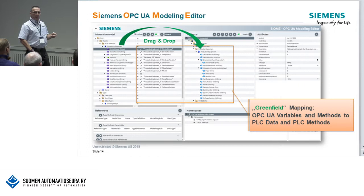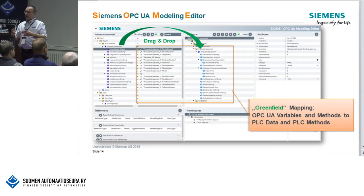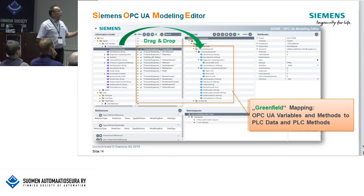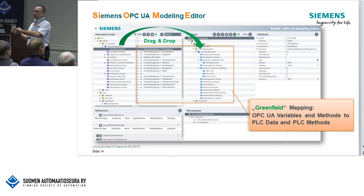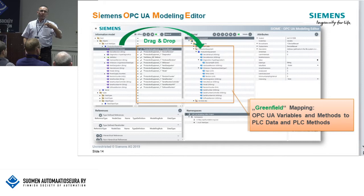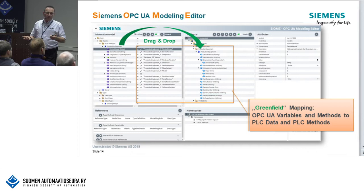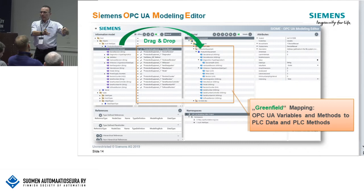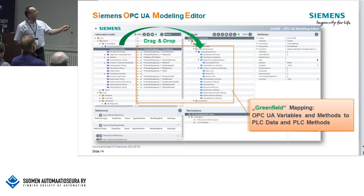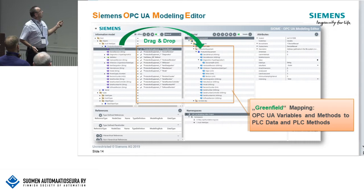One brownfield option is to directly drop a data block into SIOME — you will get an interface that is exportable as a NodeSet file. The OPC UA interface description for transporting it from A to B is called NodeSet, and it is standardized: it is an XML file that standardizes how objects, references, variables, and so on are described. You can export and import these NodeSet files — for example, a Siemens PLC as server can export its NodeSet and it can be imported into Beckhoff, which creates the client. Vice versa, if Beckhoff is the OPC UA server you can import that NodeSet here and create a client interface that exactly follows this interface.